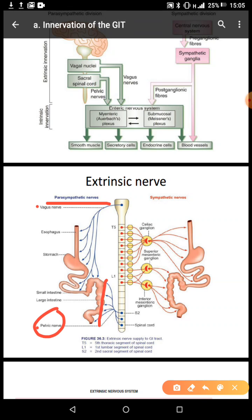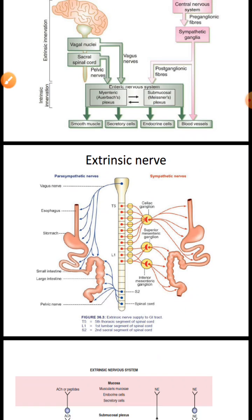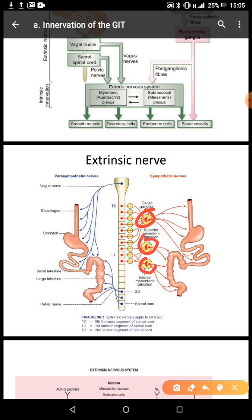In terms of ganglia — a ganglion is just a cluster of nerve cell bodies — the ganglia of the parasympathetic are not visible at a distance; they are located near the target organs. In the GIT, these ganglia are located in the walls of the GIT within the myenteric and the submucosal plexus.